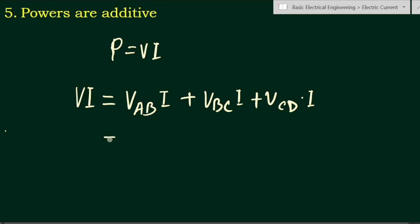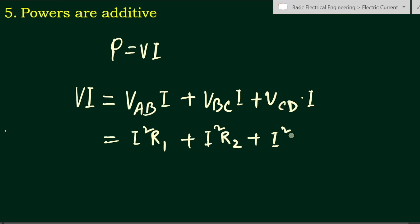Substituting Vab = I·R1, the individual powers become I²·R1 + I²·R2 + I²·R3. The total power V·I equals the sum of the individual powers across resistances R1, R2, and R3.